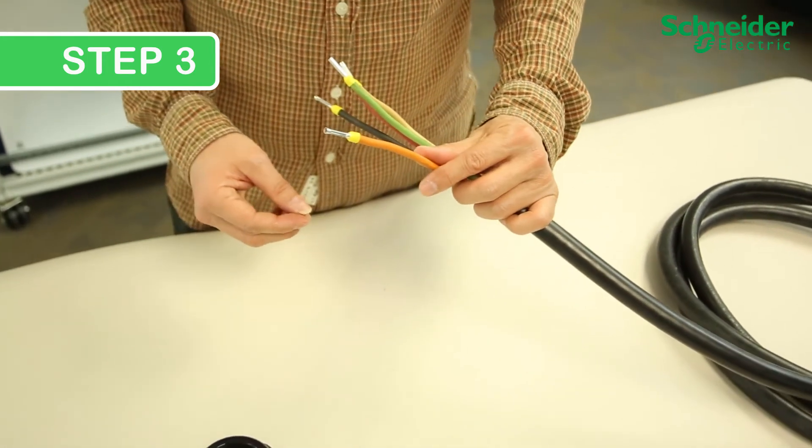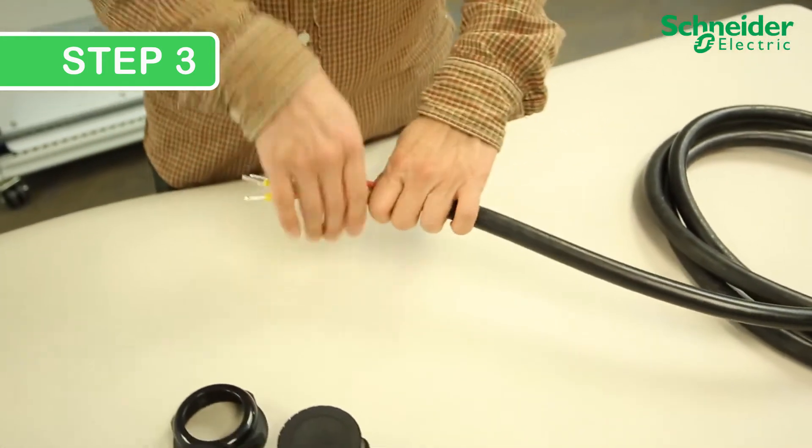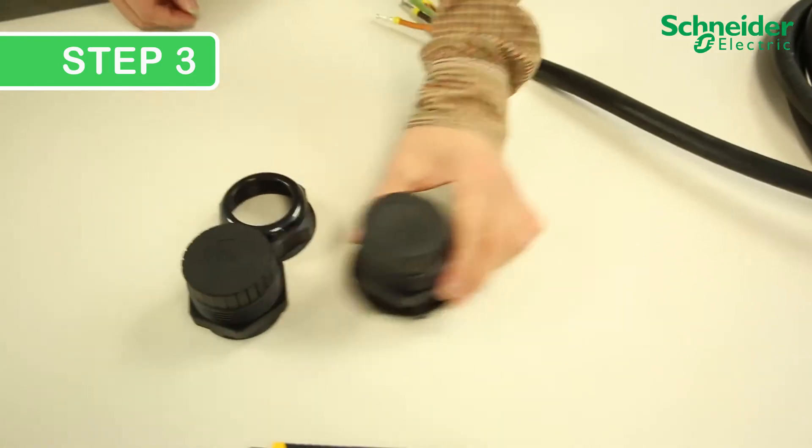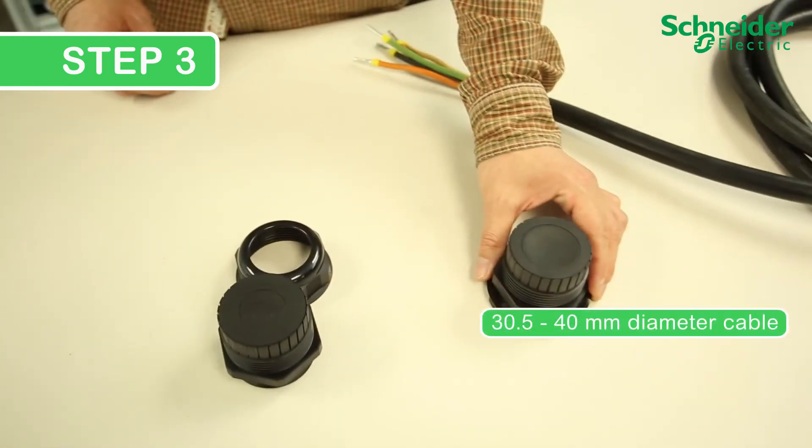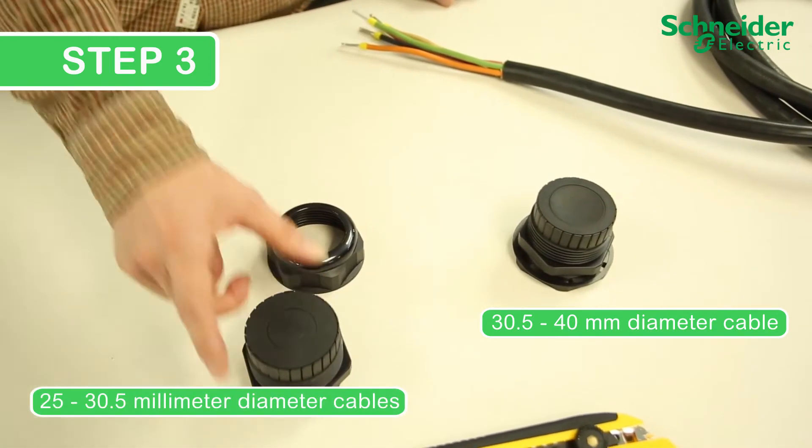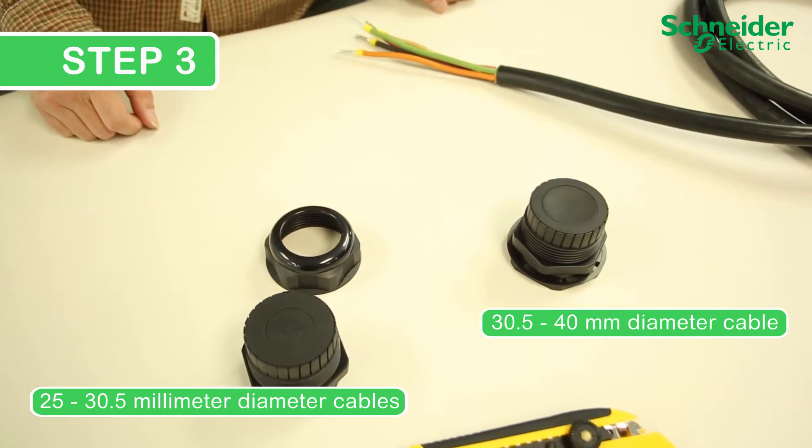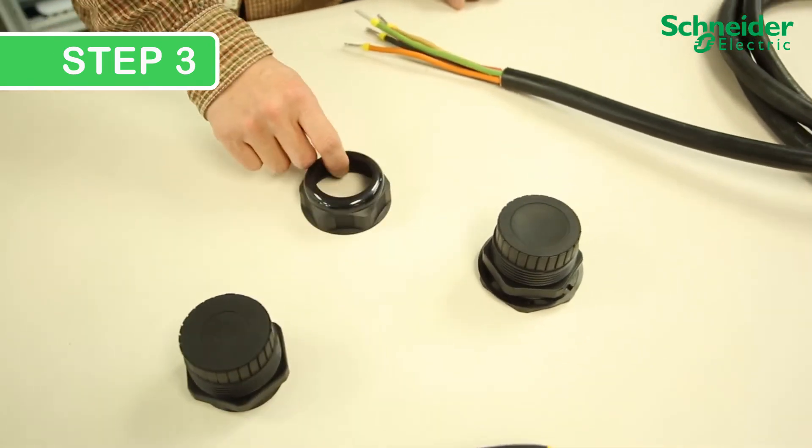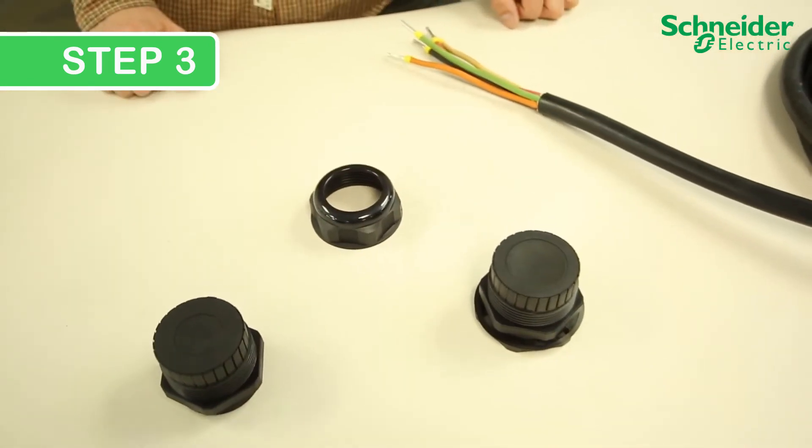With the CL60 comes two AC glands. One is pre-installed for 30.5 to 40mm diameter cables. And a second size is included with the accessories for smaller 25 to 30.5mm cables. A single sealing ring to clinch the gland is included as well. It is to be used with both AC glands.